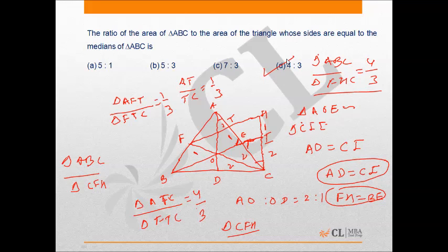In this problem, the trick was construction. After that, we needed to prove that triangle CSF was the triangle whose sides were of length of medians of triangle ABC. After that, we just needed to find the ratio of area of triangle AFT and FTC. Thank you.